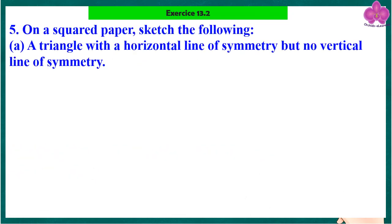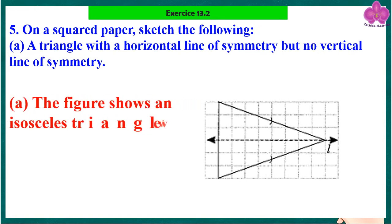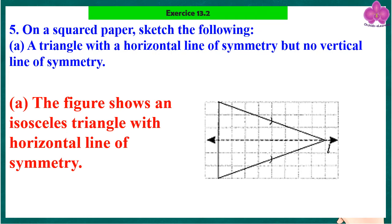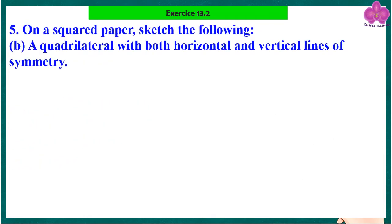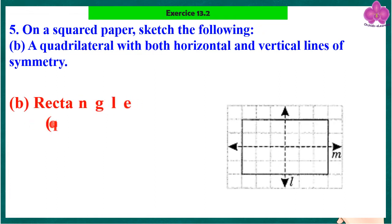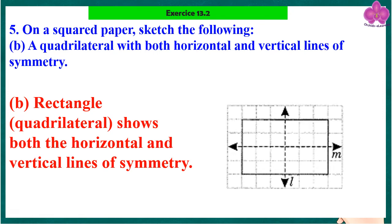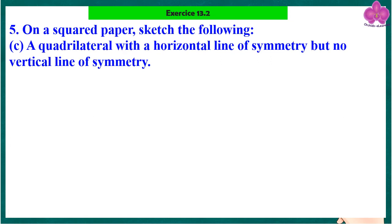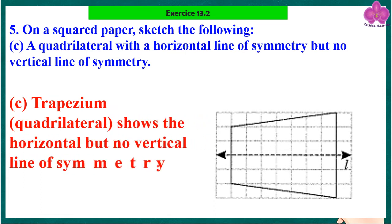Question 5: On square paper, sketch the following. (a) A triangle with a horizontal line of symmetry but no vertical line of symmetry — the figure shows an isosceles triangle with a horizontal line of symmetry. (b) A quadrilateral with a horizontal line of symmetry but no vertical line of symmetry — the trapezium quadrilateral shows a horizontal but no vertical line of symmetry.